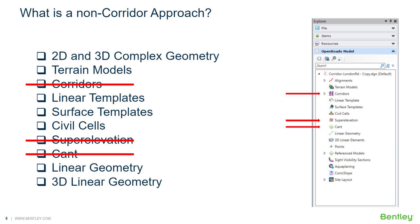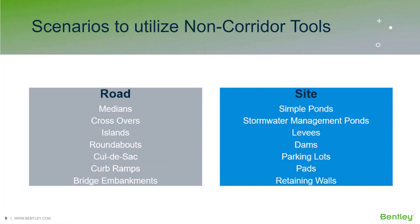We have civil cells that are delivered or can be developed, and then using linear geometry and 3D linear geometry, essentially using graphical elements. These are not a comprehensive list, but they represent some of the scenarios where we may want to use a non-corridor approach.